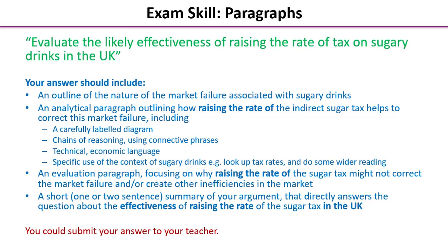Let's work through what your answer should include. Start with an outline of the nature of the market failure associated with sugary drinks - it's impossible to write about the effectiveness of the tax unless you establish what you want it to be effective against. Then move on to an analytical paragraph looking at how raising the rate of the indirect sugar tax helps to correct that market failure. Note the question is about the effectiveness of raising the rate of tax, not just the tax itself, so answer precisely.